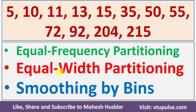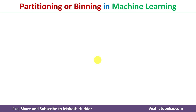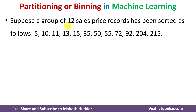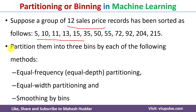Welcome back. In this video I will discuss how to create bins by using different techniques like equal frequency partitioning, equal width partitioning, and smoothing by bins. We will take one simple example. We have 12 sale price records as data points and we need to partition them into three bins by each of the following methods: equal frequency, equal width, and smoothing by bins.